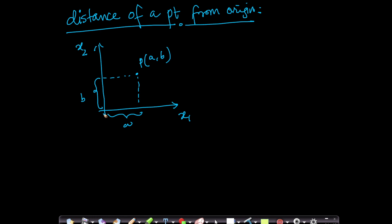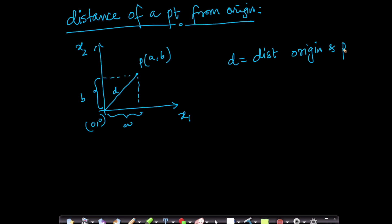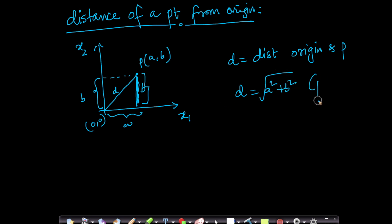What is the distance from the origin to this point? This is the origin. The distance D is the distance between the origin and the point. If you apply the Pythagorean theorem, with this length B and this length A, then D is nothing but the square root of A² plus B². This comes from simply applying the Pythagorean theorem.